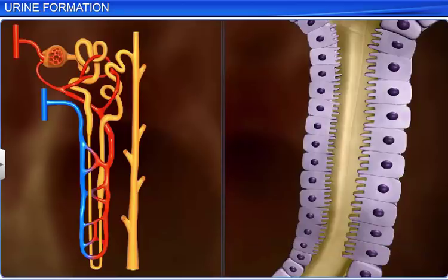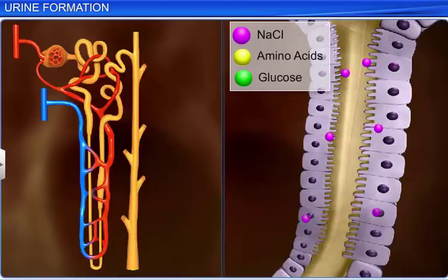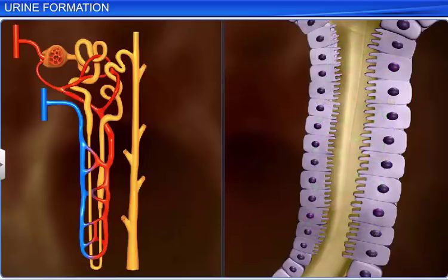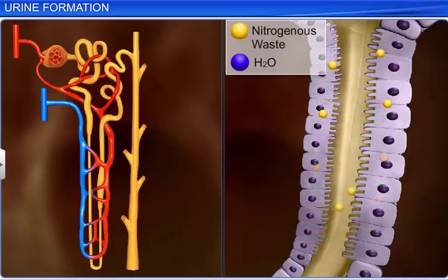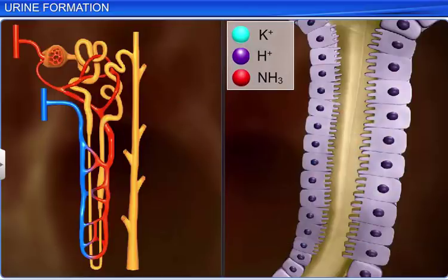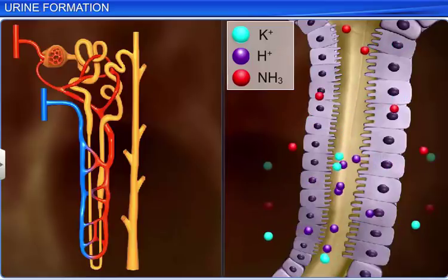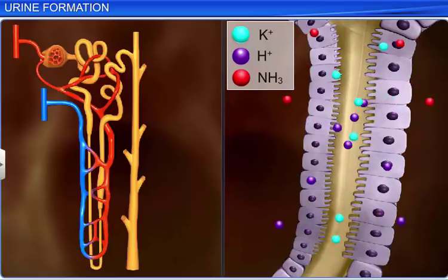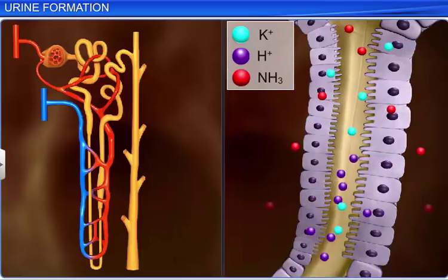Substances in the filtrate such as sodium, amino acids, and glucose are absorbed by active transport, while nitrogenous wastes are absorbed by passive transport. Water is also reabsorbed passively in the initial segments of the nephron. Apart from absorption, the cells in the renal tubule also selectively secrete substances such as potassium and hydrogen ions and ammonia into the filtrate, to maintain the pH and ionic balance in body fluids.